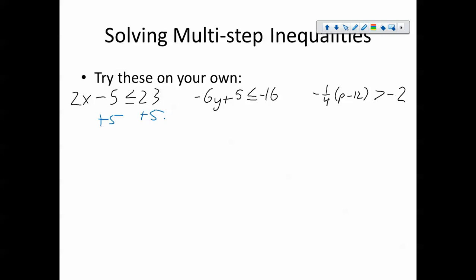We add 5 to both sides, leaving this as 2x is less than or equal to 28. Then I'm going to divide both sides by 2, and I end up with x is less than or equal to 14. And that's my solution. Notice again, I did not switch the sign because I did not divide by a negative number.